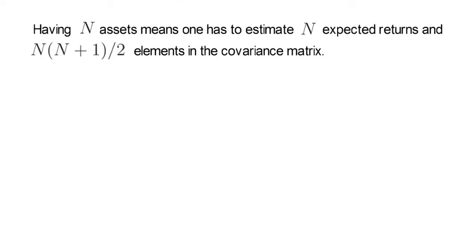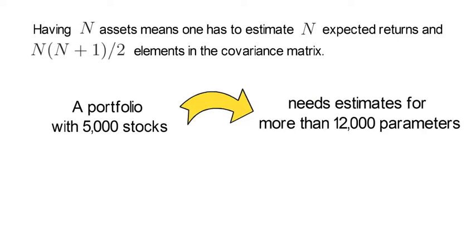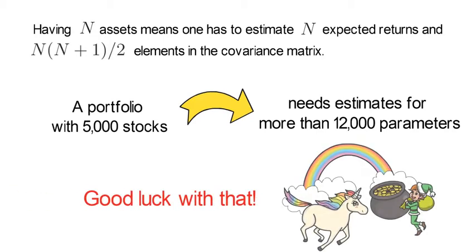Having N assets means one has to estimate N expected returns and N×(N+1)/2 elements in a covariance matrix. If you have a portfolio with 5,000 stocks — roughly the number of listed US stocks — you have to estimate more than 12 million parameters. So good luck with that. That basically won't work, and that's what the horse race shows.